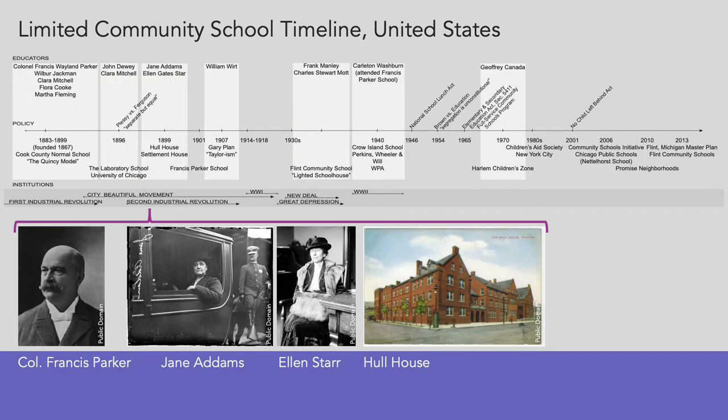Dewey's work co-occurred with other influential social movements and activists. These included the City Beautiful movement, an architecture and landscape architecture response to deteriorating living conditions in cities following industrialization; Jane Addams' and Ellen Starr's Hull House, located on the west side of Chicago, which was an early settlement house offering multiple social services based on the model of Toynbee Hall in London's East End; and Cook County Normal School for teacher training, directed by Colonel Francis Parker, whom Dewey referred to as the Father of Progressive Education.